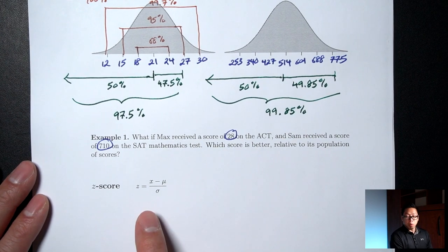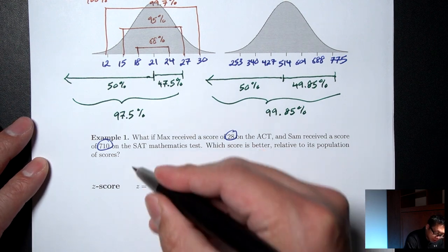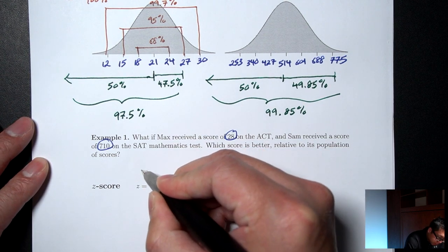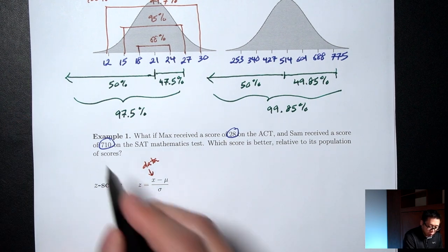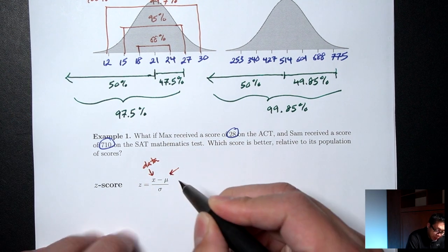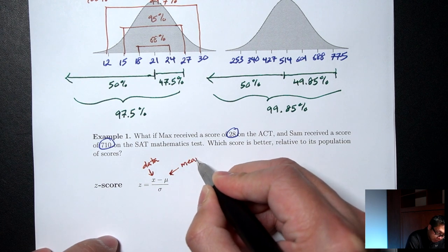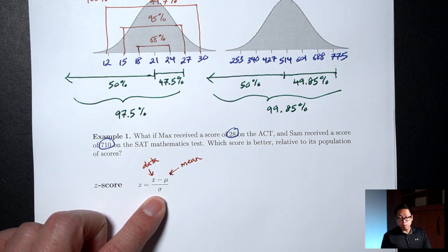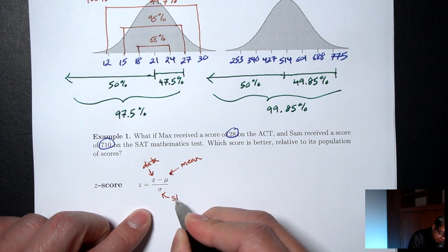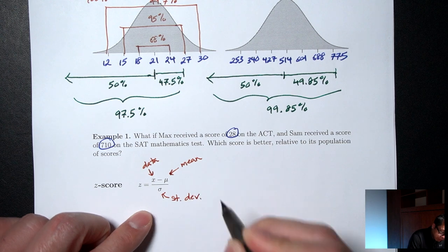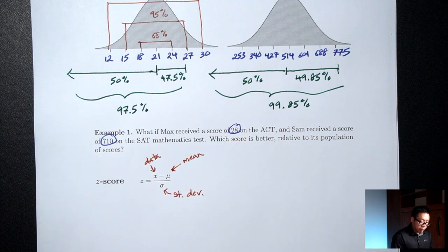We use what's called a z-score. Let me tell you what each part of the formula means. The x is our data — in this case, the scores. The mu is the symbol for the mean, and the sigma on the bottom is the symbol for the standard deviation. So let me calculate the z-score for both the 28 and the 710.